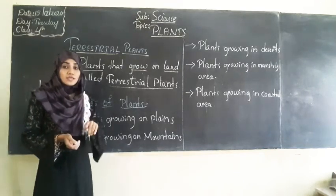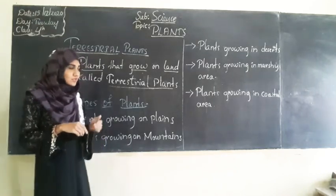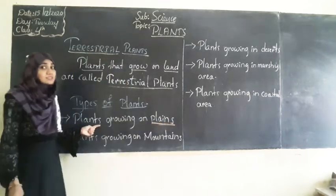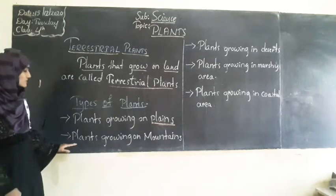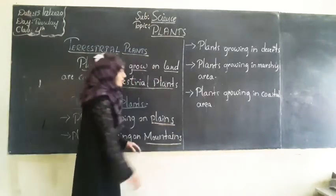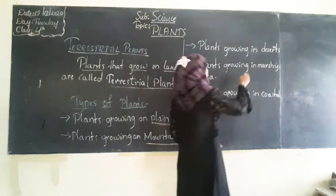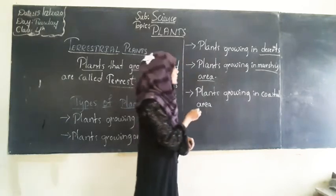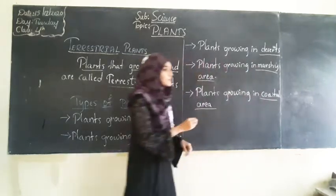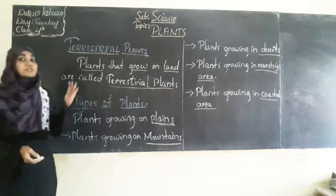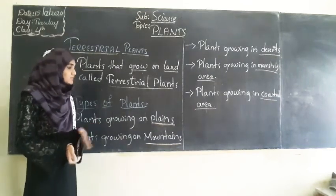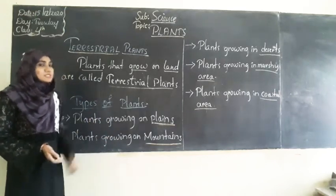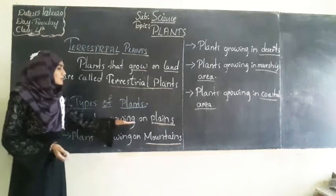Habitat means the place where plants survive. The first type is plants growing on other plants. Some plants grow on plants, some grow on mountains, some grow in deserts, some in marshy areas, and some in coastal areas. These are the five types of terrestrial plants based on their habitat. We will study each one in detail.